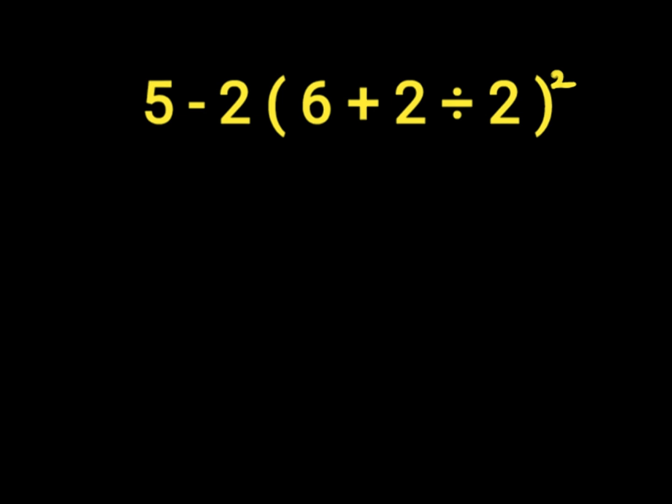So first of all, parenthesis, which is 6 plus 2 divided by 2. 6 plus 2 will give us 8. Then 8 divided by 2, and we'll put it in our exponent. Then we have 5 minus 2. So 8 divided by 2 will give us 4. So then we have exponent 4.